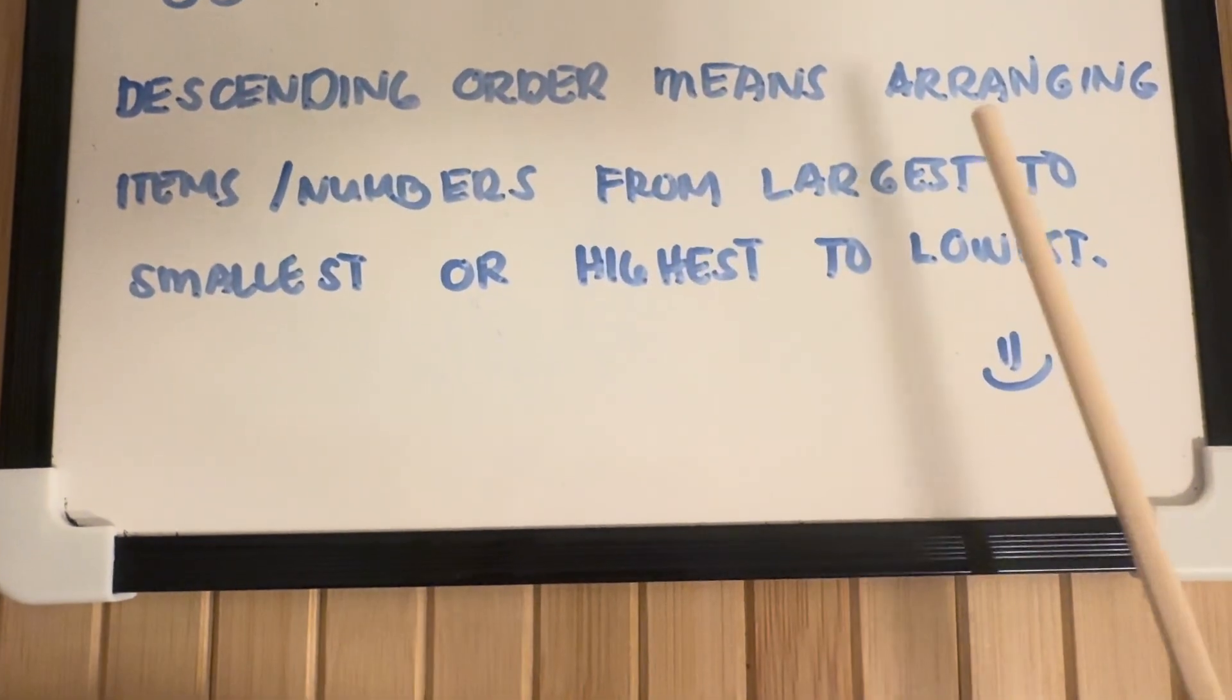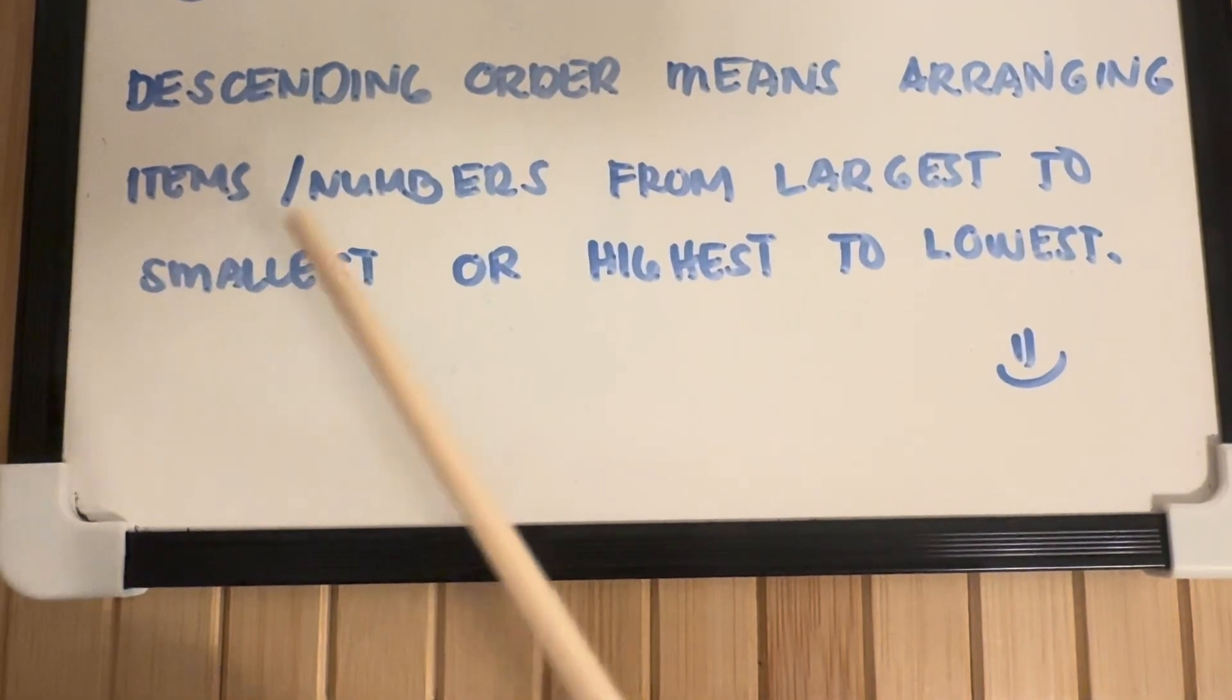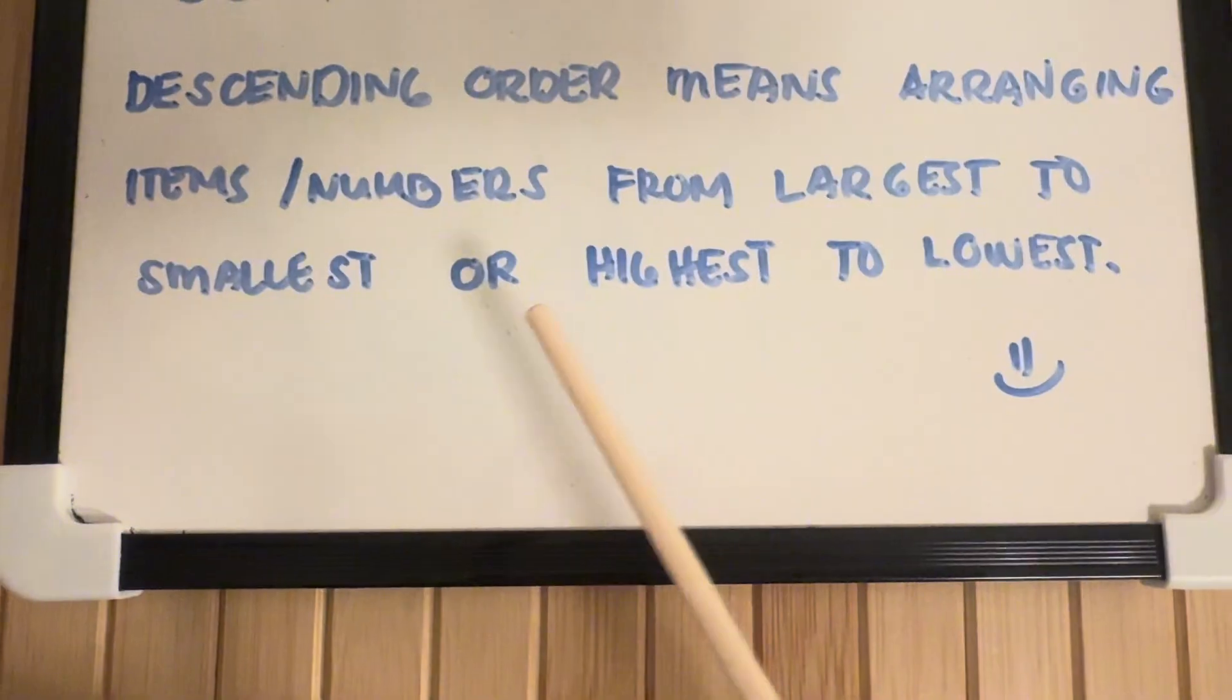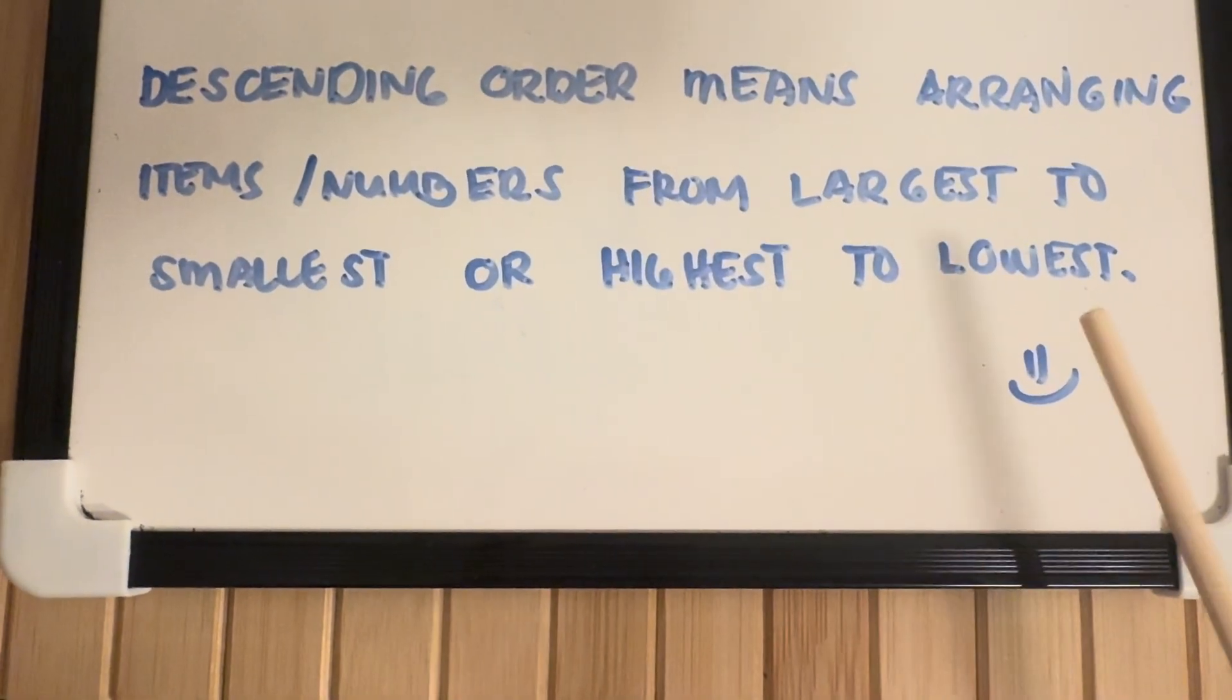Descending order means arranging items or numbers from largest to smallest or highest to lowest.